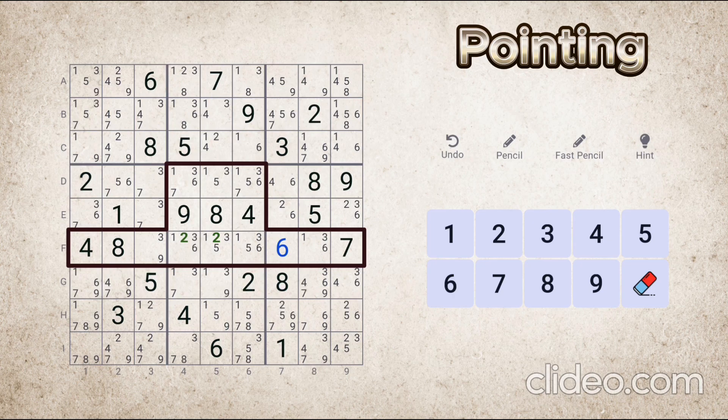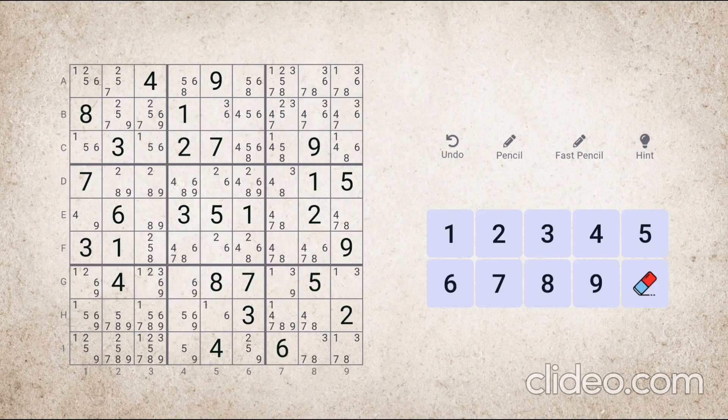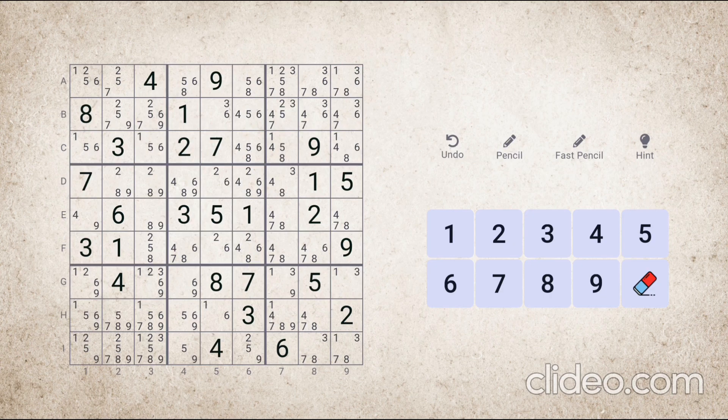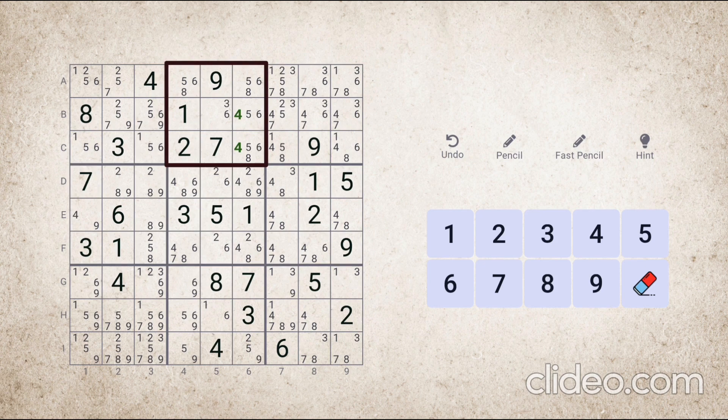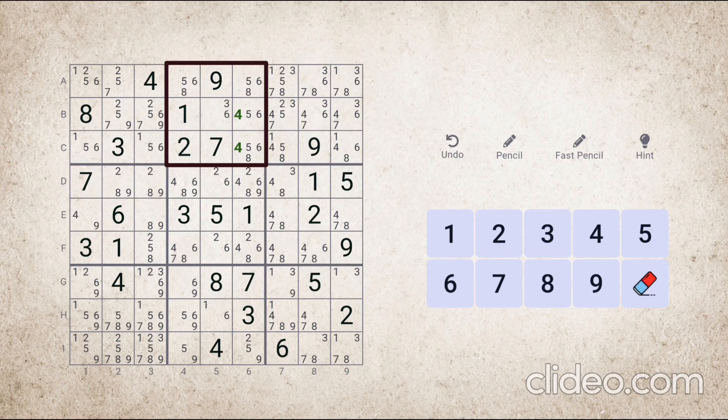Let's now look at another example of the same type involving a block and a column. So in this puzzle, look at number four in this block. Number four can only come in these two cells. And both of these cells are part of this column as well.